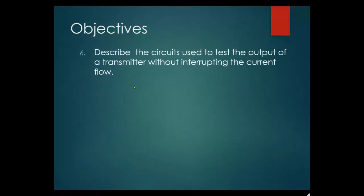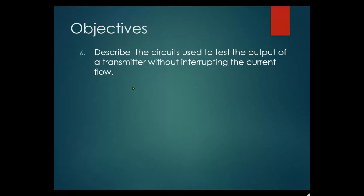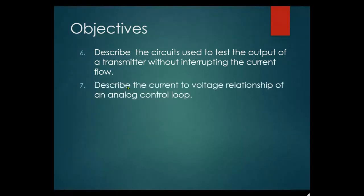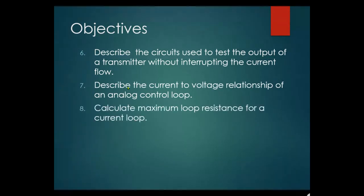Objective three: describe the currents used to test the output of the transmitter without interrupting current flow. When we go across the test leads on a transmitter, there is a silicon diode, and the voltage drop across it is 0.7 volts. If you open the loop to measure current, you'll shut down the loop. With test leads, it's essentially a forward-biased diode allowing current to flow, so we can test current without opening the loop — the loop stays running.